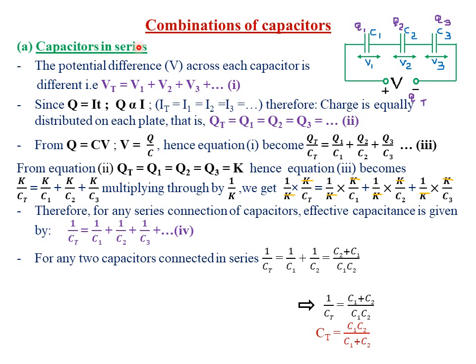Just like resistors, which we discussed in our current Electrostatics 2, we did say that when components are connected along each other, then they are said to be in series connection. So these are our three capacitors which are connected along each other. Therefore, they are in series connection.